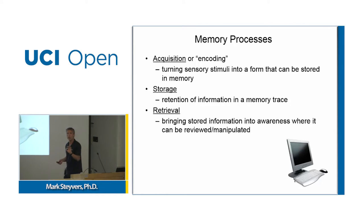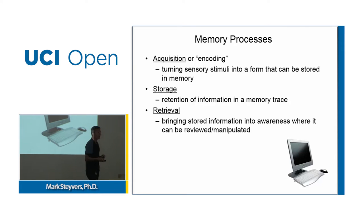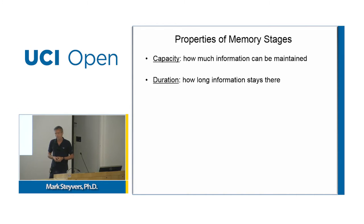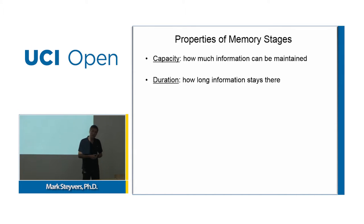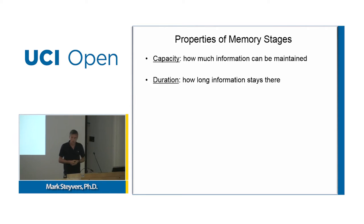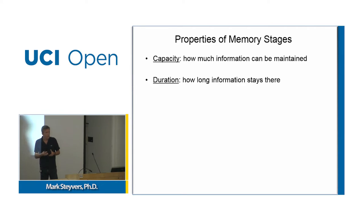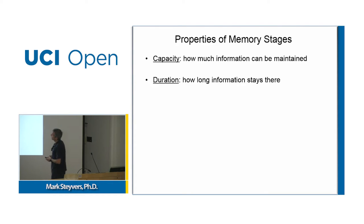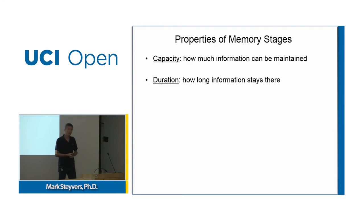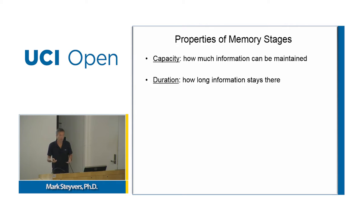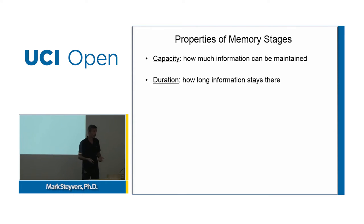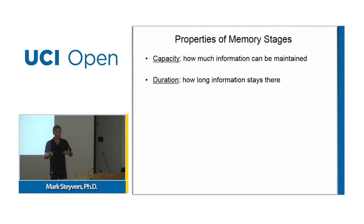Computers are very good at retaining information for a very long time, and human memory is more fallible. There's a distinction between three different memory stages, and these stages differ in terms of capacity and duration. Some stages might have a huge capacity — able to maintain a very large amount — while others might maintain just a few items. Some stages hold information for just a few hundred milliseconds, others for a lifetime. There's a bit of a trade-off: stages with large capacity tend to have short duration, and vice versa.